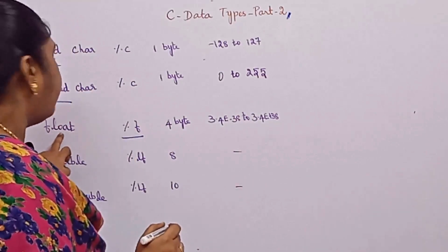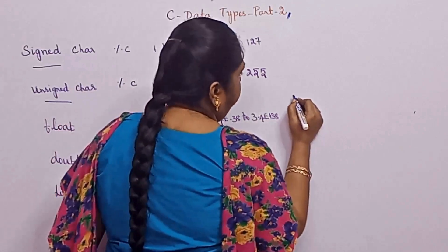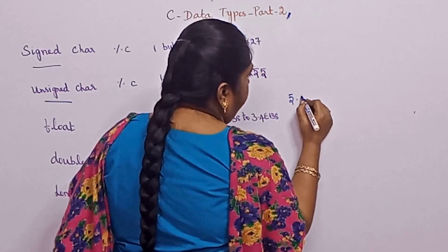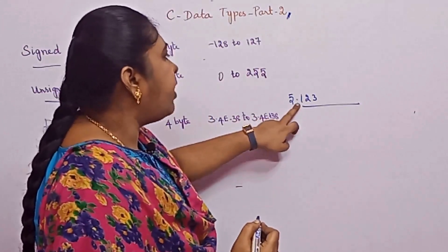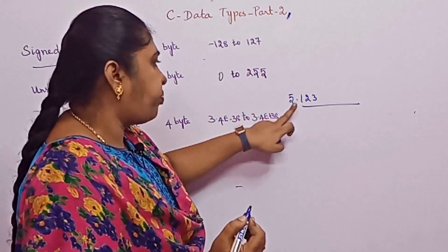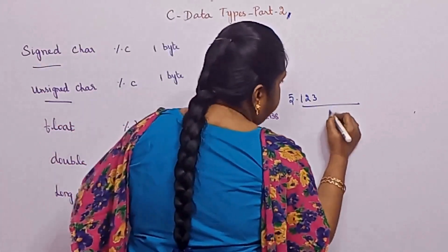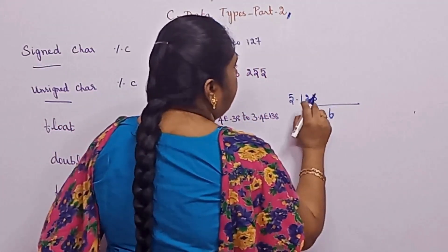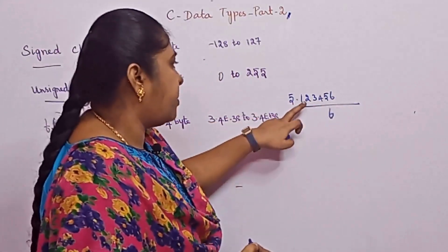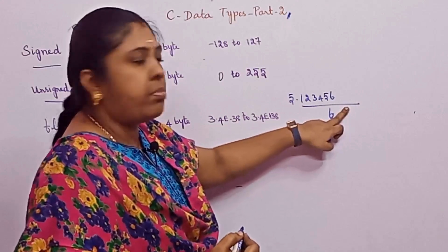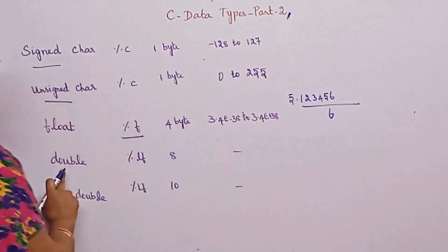Consider an example for a float data type: 5.123456. When we are having a decimal digit it is a float. How many digits does a float support? It consists of 6 digits — for your understanding I had written as continuous numbers, so here we have represented 6 numbers. So 6 digits are allowed for a float data type.